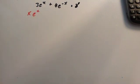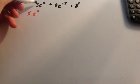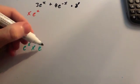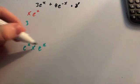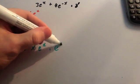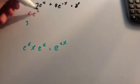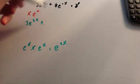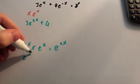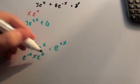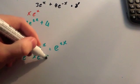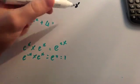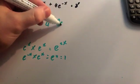Doing that gives me 3, and then e to the x times e to the x — remember you add the powers — so that would be e to the 2x. So this is going to be 3e to the 2x, plus here you have 4e to the minus x times e to the x. Well, minus x plus x gives e to the 0, and e to the 0 is 1, so that would just be 4. And then 8 times e to the x is 8e to the x.